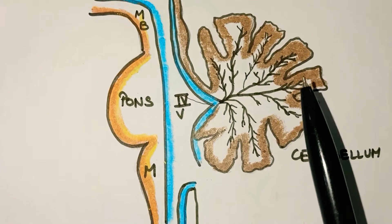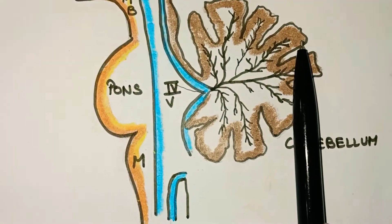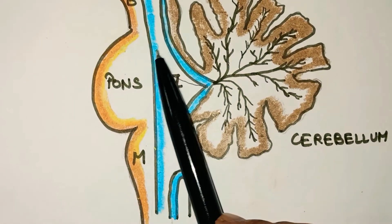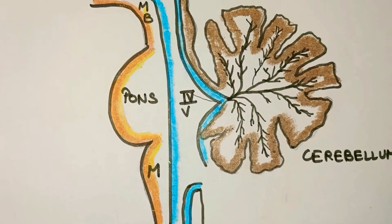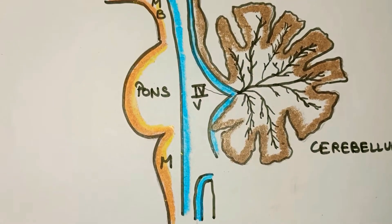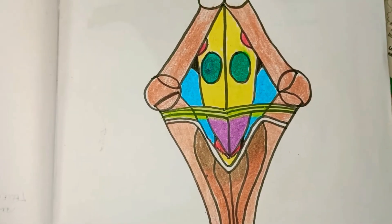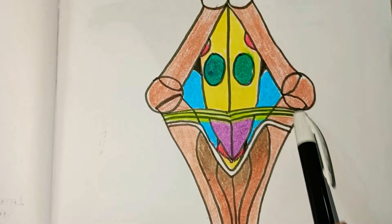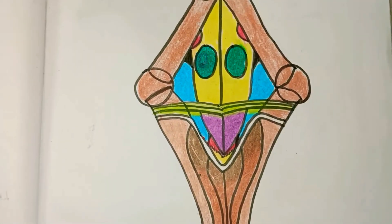Regarding its appearance: in the sagittal section it appears as a triangle. In the horizontal section it appears as a rhomboid shape.